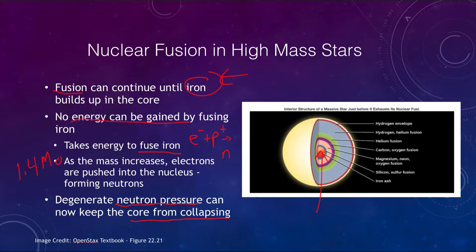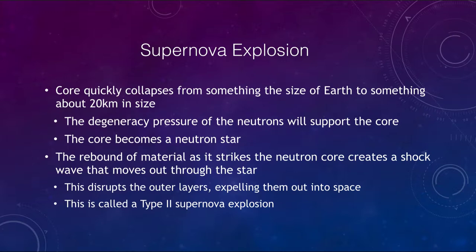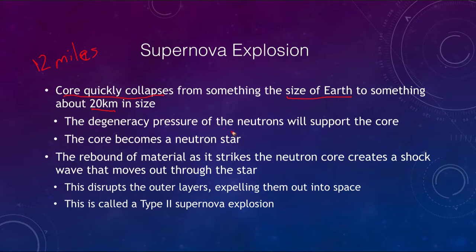In a supernova, the core quickly collapses — this is extremely fast, not just from an astronomical standpoint but from any standpoint. You've compressed it down from the size of the Earth to something about 20 kilometers, or about 12 miles, in size — going from a planet-sized object to the size of a city. At that point, the degeneracy pressure of the neutrons supports the core and we form what is called a neutron star. A white dwarf forms when electron degeneracy pressure holds up the star; a neutron star forms when the degeneracy pressure of the neutrons is supporting it.